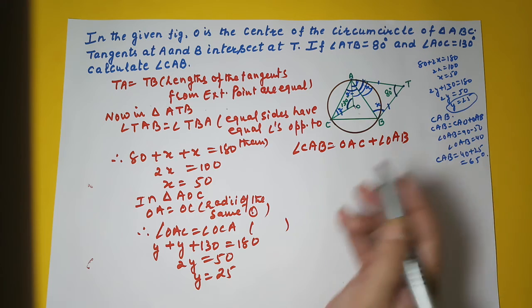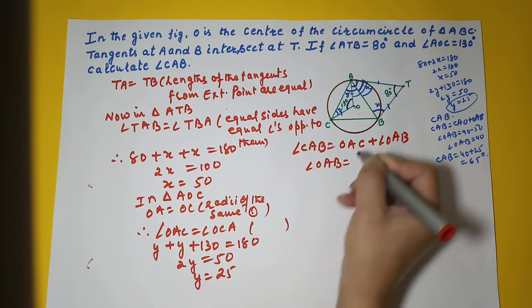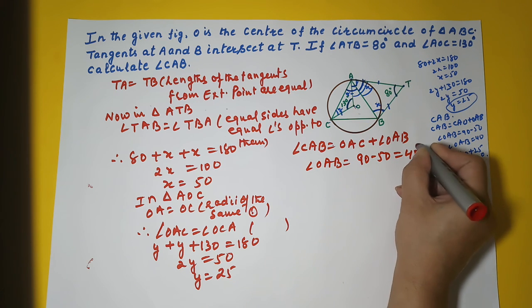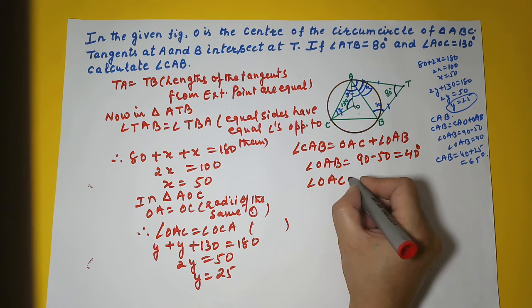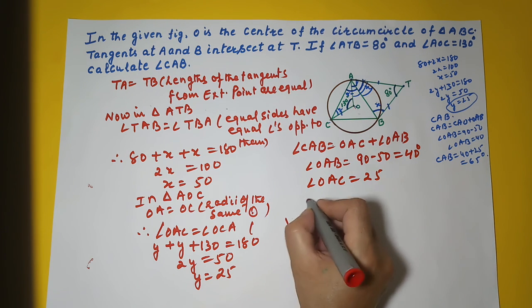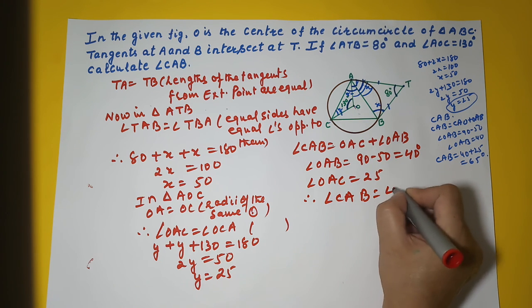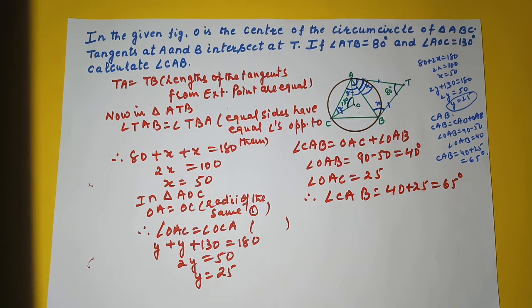Now how do we calculate OAB? You first calculate OAB as 90 minus 50 which is equal to 40. Angle OAC you have calculated as 25. Therefore angle CAB is equal to 40 plus 25 which is your 65.